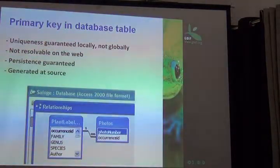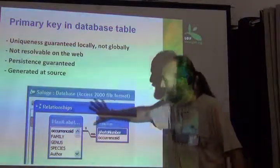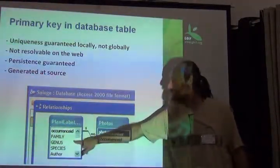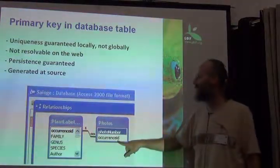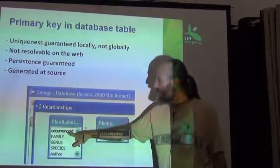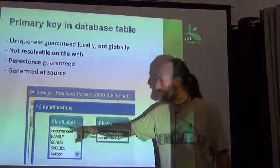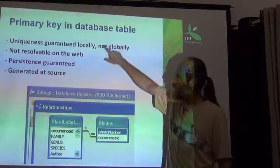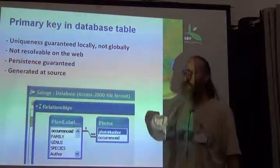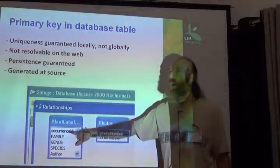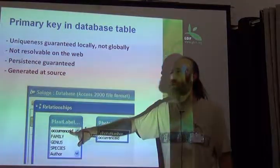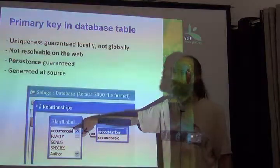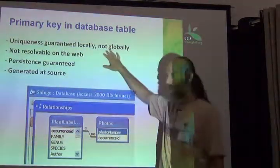If we go to a primary key, here's a snapshot of our final product from yesterday in which we had two tables: one based on occurrences, one based on photos. The occurrence ID in the occurrence table was a primary key in a database. In this case, uniqueness is guaranteed — the database will not allow you to create two of the same occurrence IDs in that table — but only within this table. So it's guaranteed locally, but not globally.